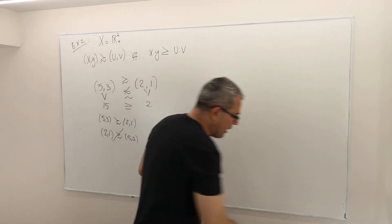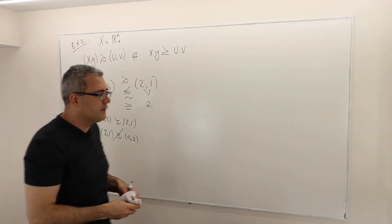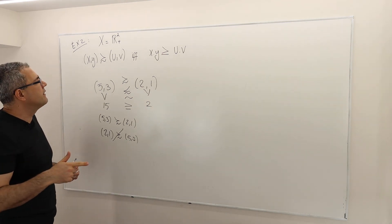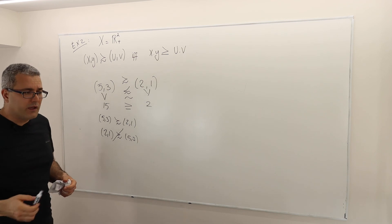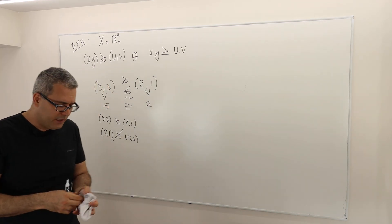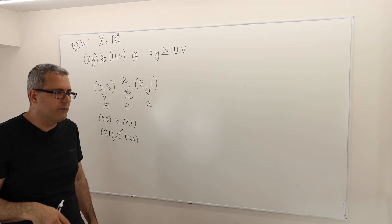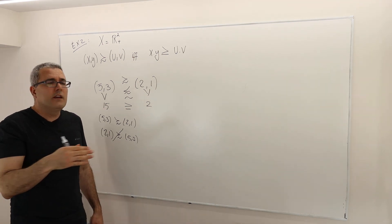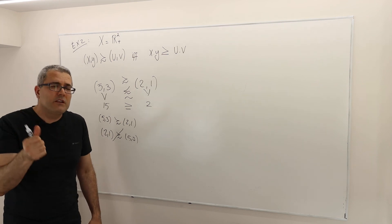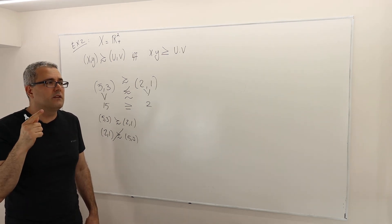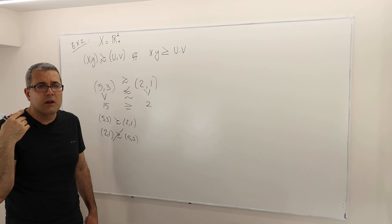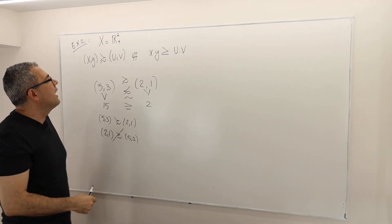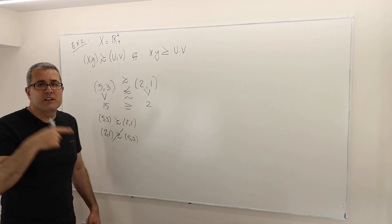So now let's jump on the same questions. Is this reflexive, transitive, and complete? I'm going to give you the answer straight away. This is a complete, transitive, and reflexive binary relation. So it's a perfect preference relation. And in fact, it satisfies condition alpha.